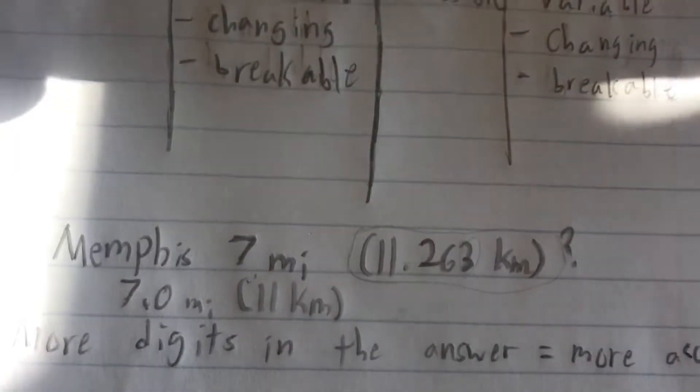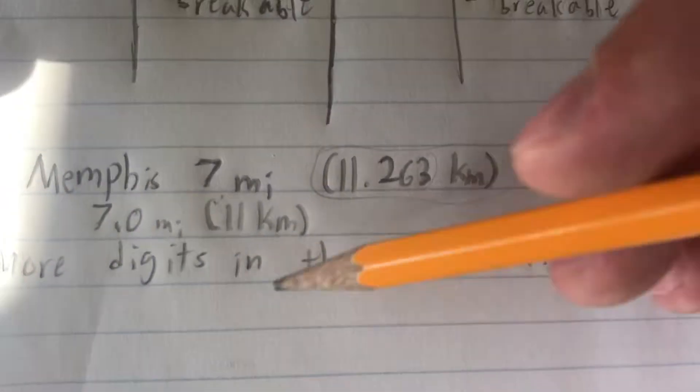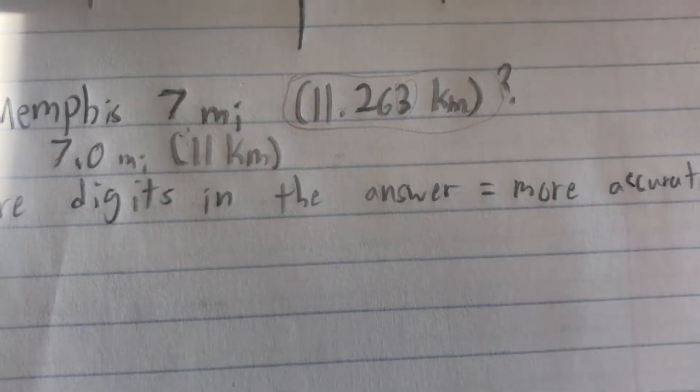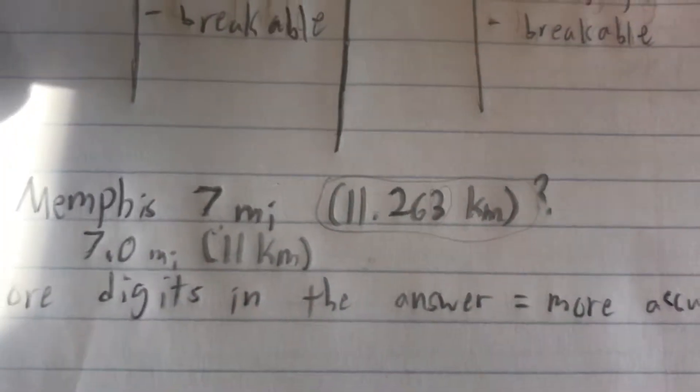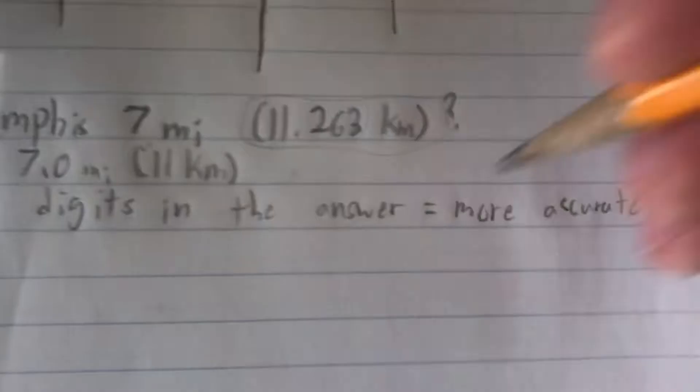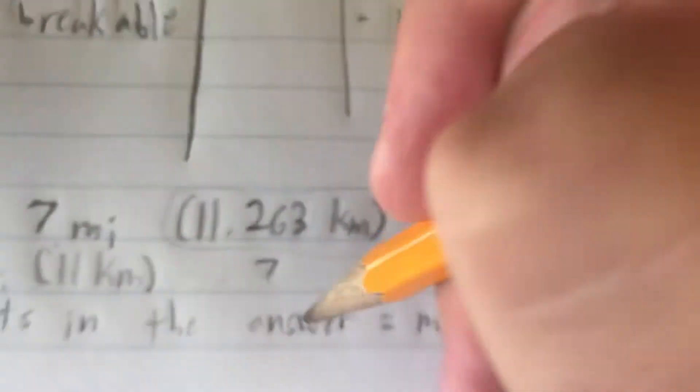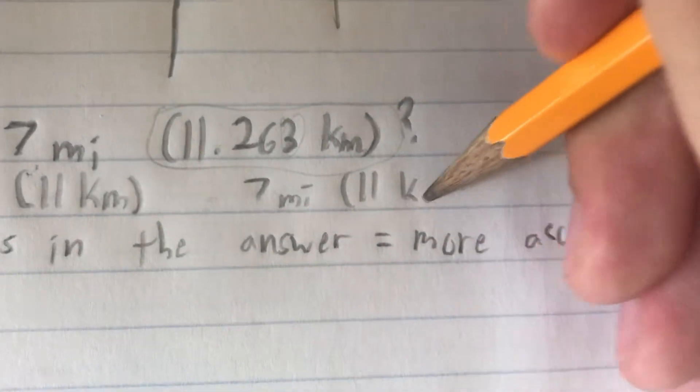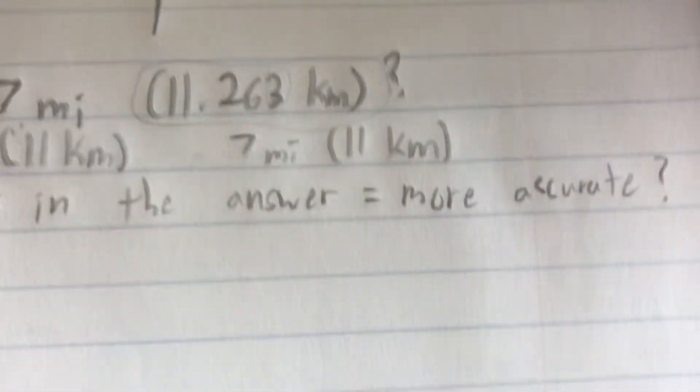Or, if that bothers you, which it shouldn't, since this is pretty accurate, but another way to write it that would still be acceptable, though it might not be everyone's cup of tea, would maybe just be to write simply 7 miles and 11 km.